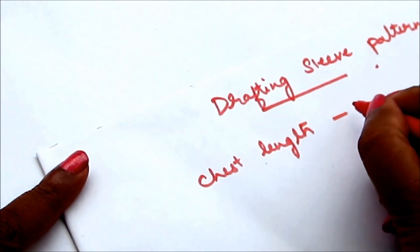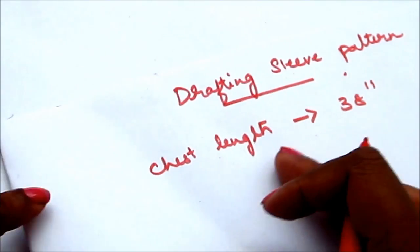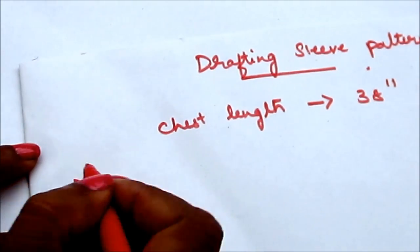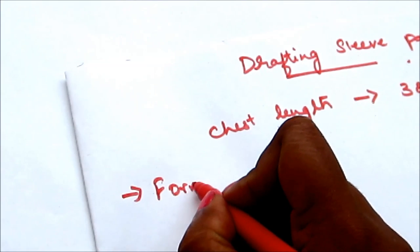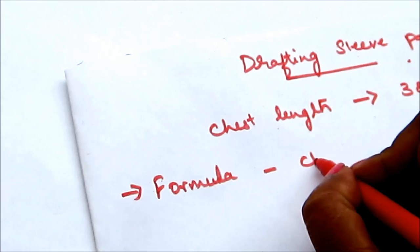For this drafting you would require two main things: the full chest length, that means the circumference of the chest length, and one standard formula which is chest length divided by 12 plus half an inch.